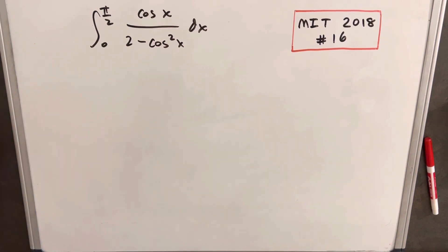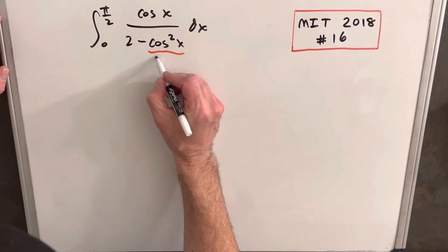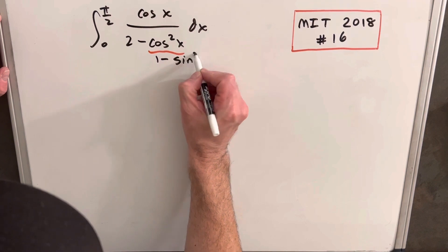Okay, at first I thought it was going to be kind of hard with the bounds, but actually I think we can just do some normal manipulation of the trig. Let's take a look at this and notice that we can actually replace this with 1 minus sine squared of x.